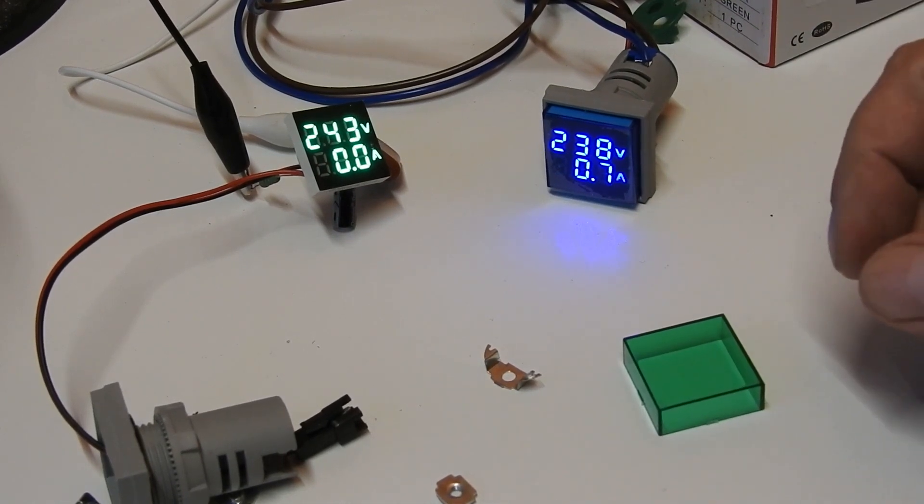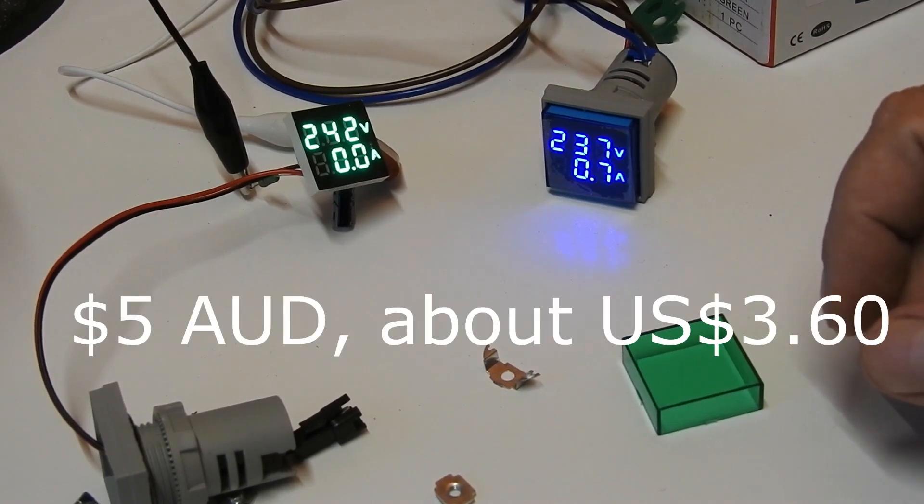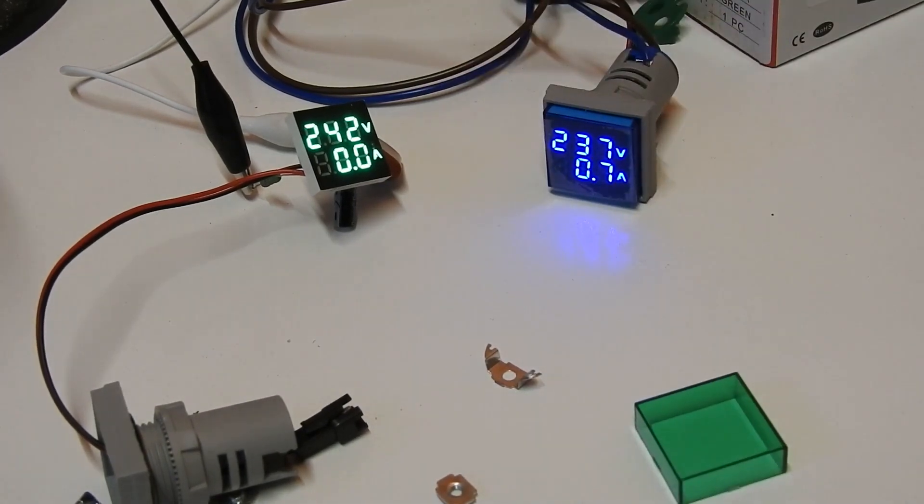Pity they don't work at lower currents but for $5 if you've got a load that's guaranteed to be a few amps, I guess they're of some use. Especially if you can trim up the current sensing to get it more accurate. So I hope you found that interesting. If you did give it a like and maybe subscribe. And I'll catch you later.